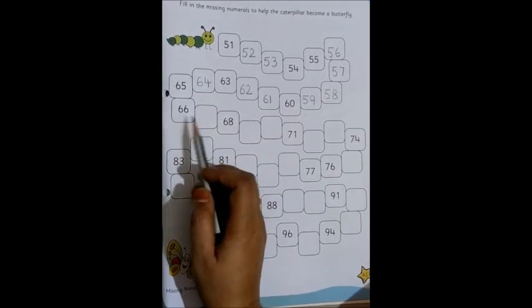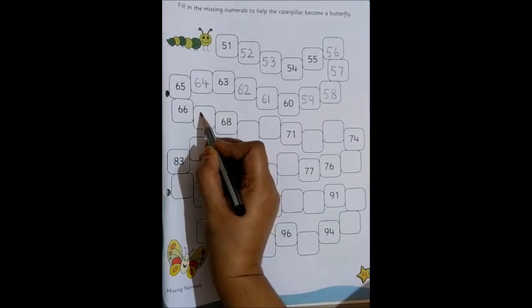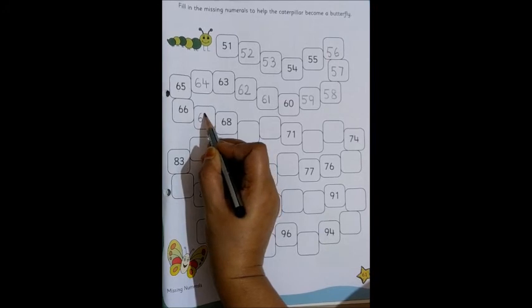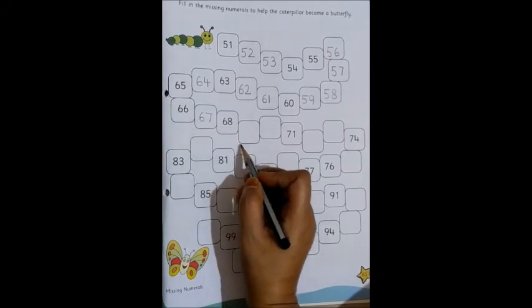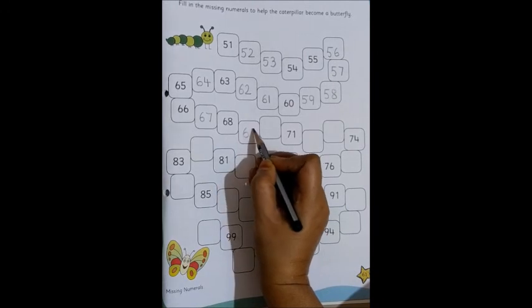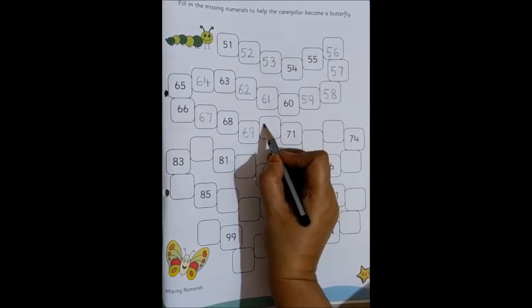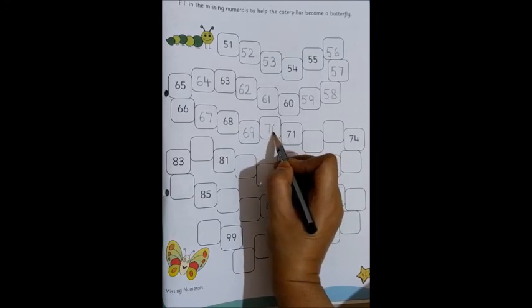65, 66. After 66, which number will come? 67. 68 is there. Then which number will come? 69. And after 69? Yes, 70.